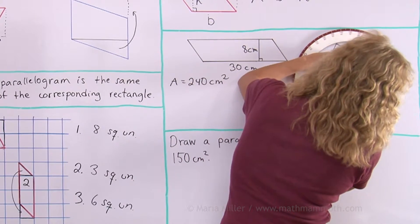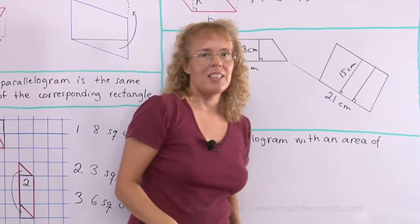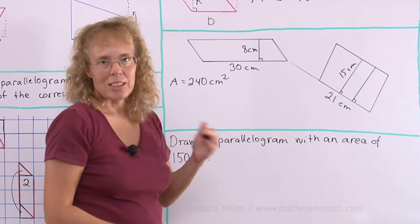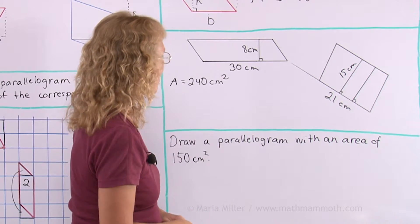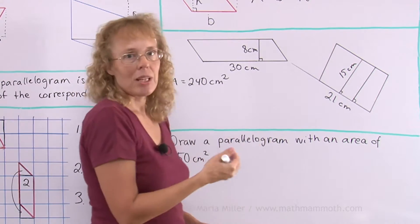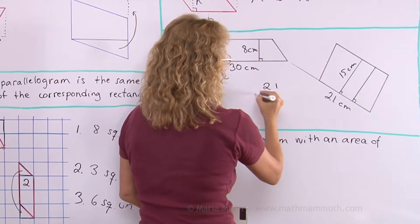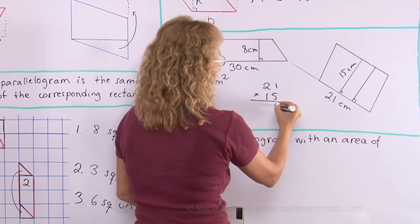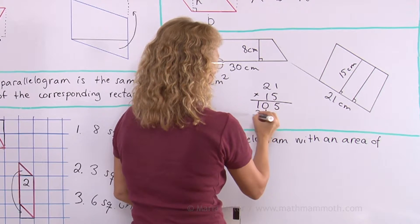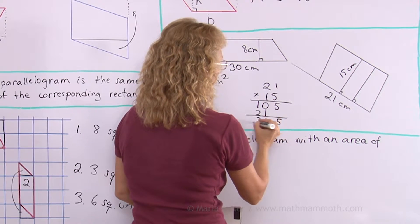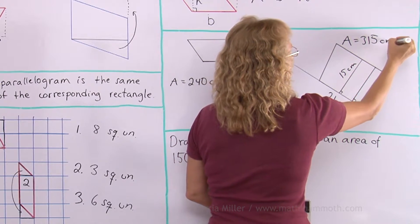So now I measure how long the altitude is. It's a little over but let's just call it 15 centimeters. Now we just multiply 21 times 15. The area of this one is 315 square centimeters.